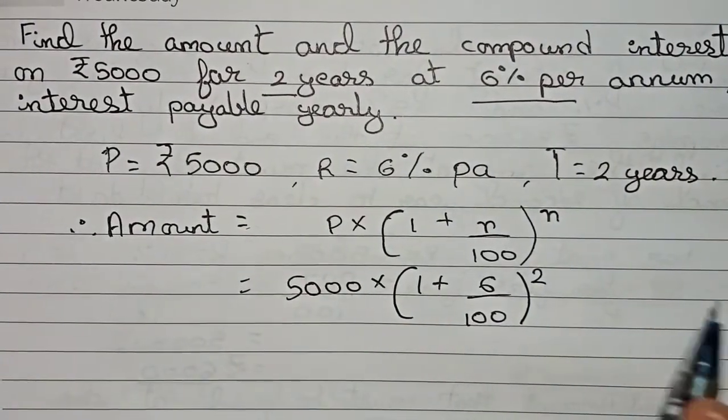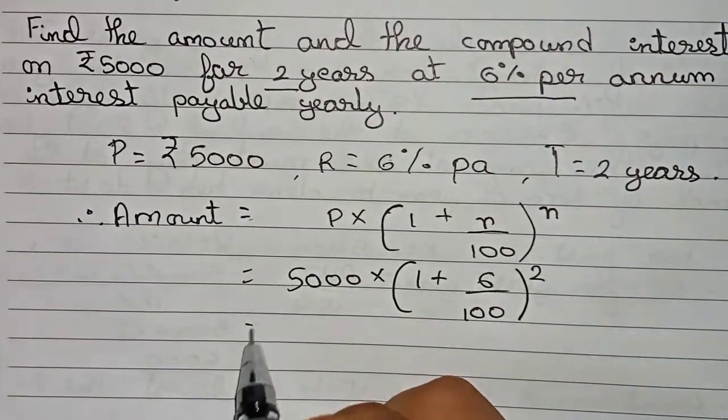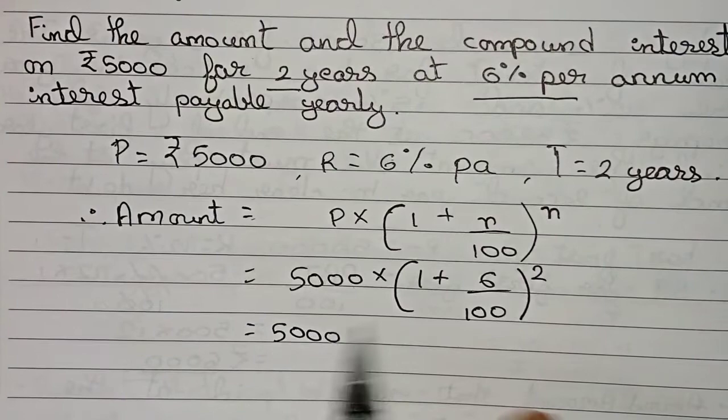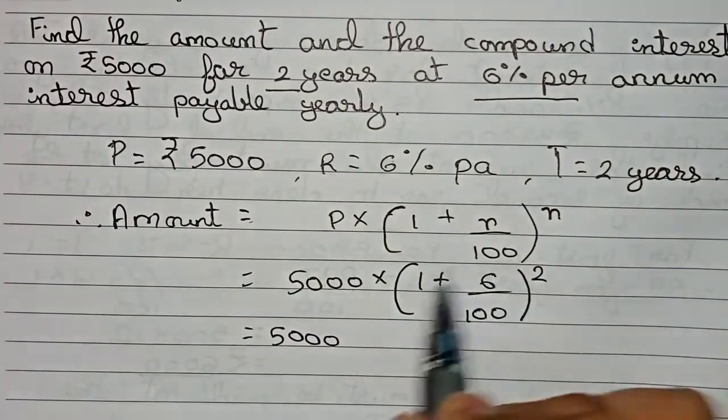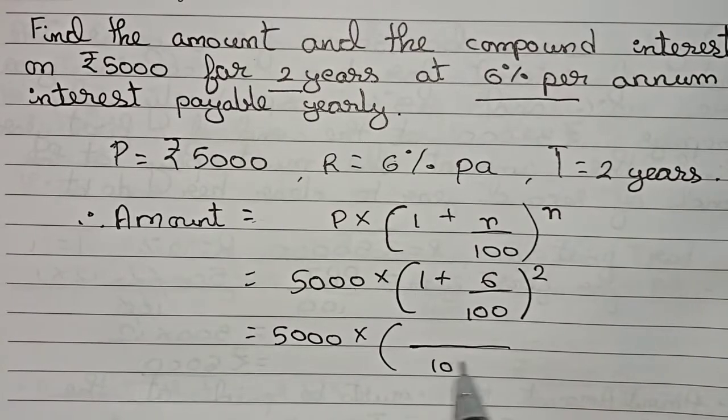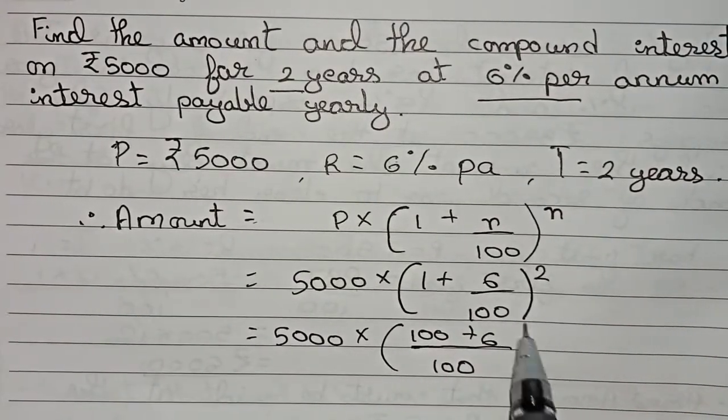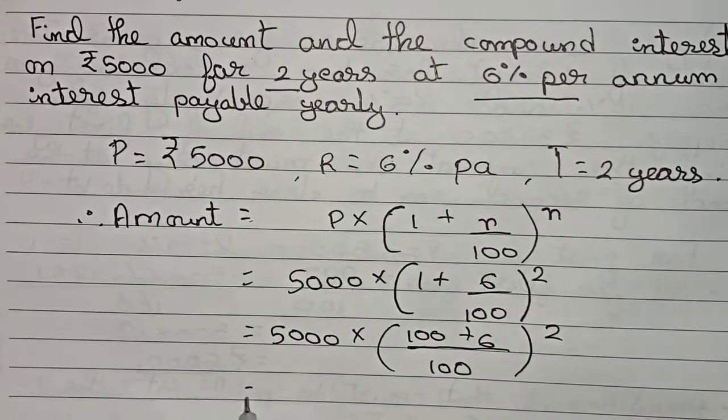So if we solve this we will get the amount at the end of two years. 5000 rewrite. Now I will solve the inside of the bracket first. Take 100 as the denominator, now 1 times 100 is 100 plus 6, squared.